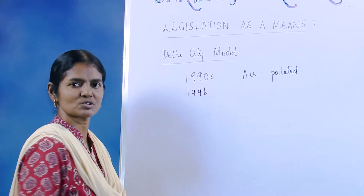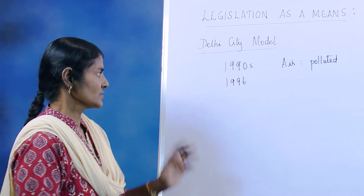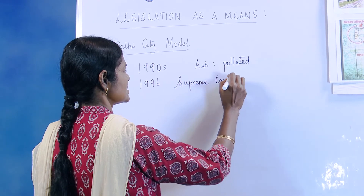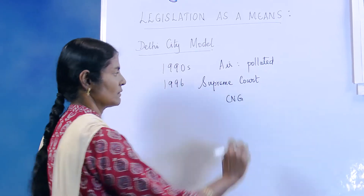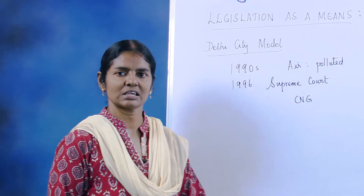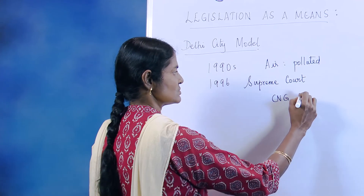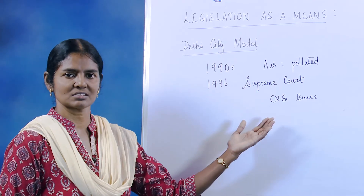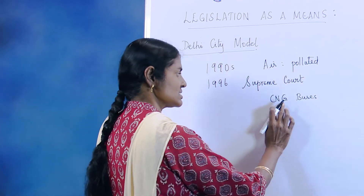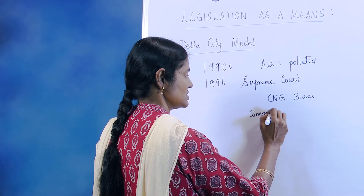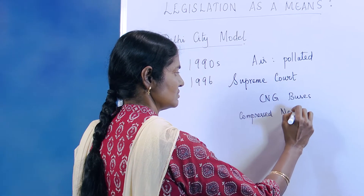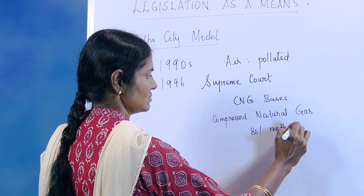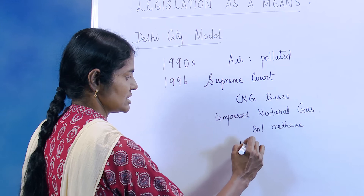In 1996, almost the same time as the Taj Trapezium Zone, the Supreme Court ordered Delhi to have only CNG vehicles — banning all other fuels and introducing CNG. A fleet of CNG buses were introduced in Delhi, and even till date Delhi has the maximum number of CNG buses.